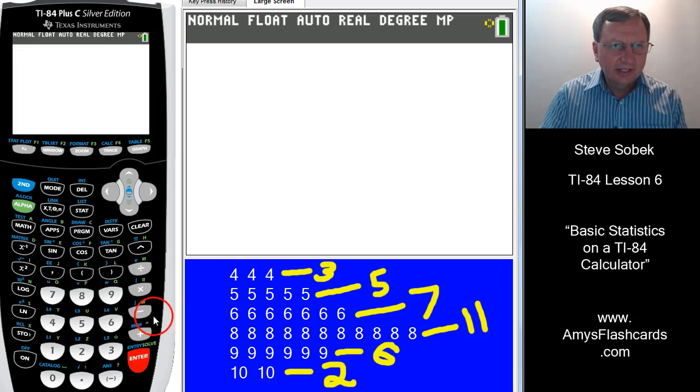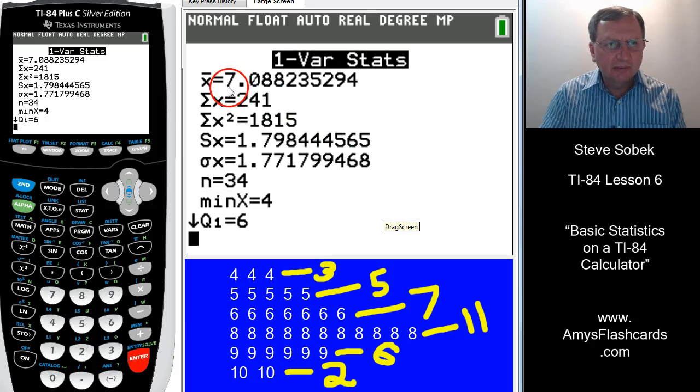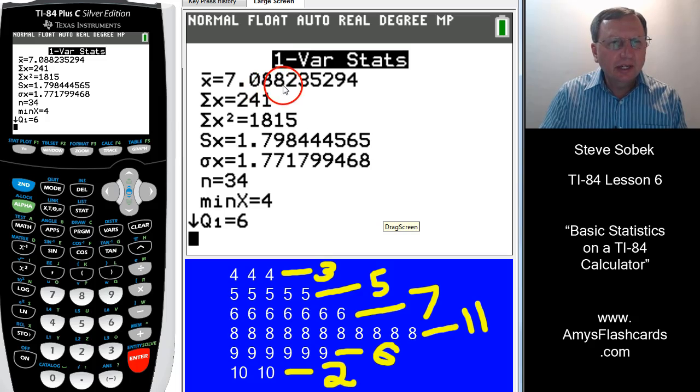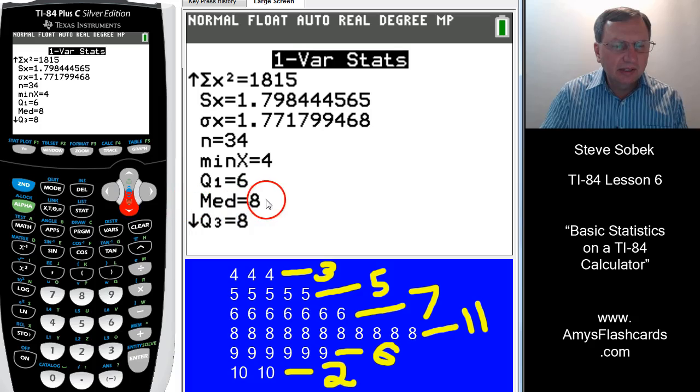Write these values down. We've got a mean, 7.08. And there's 34 data values. The standard deviation is 1.77, and we'll have to hit the down arrow key to get to the median, and the median is 8.